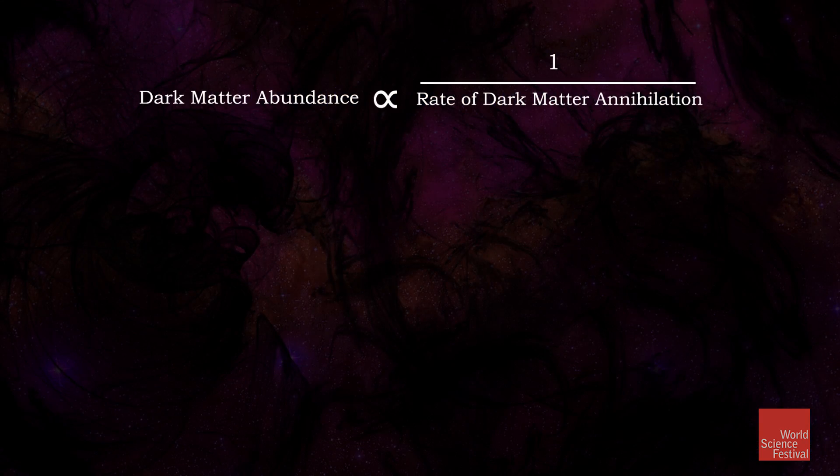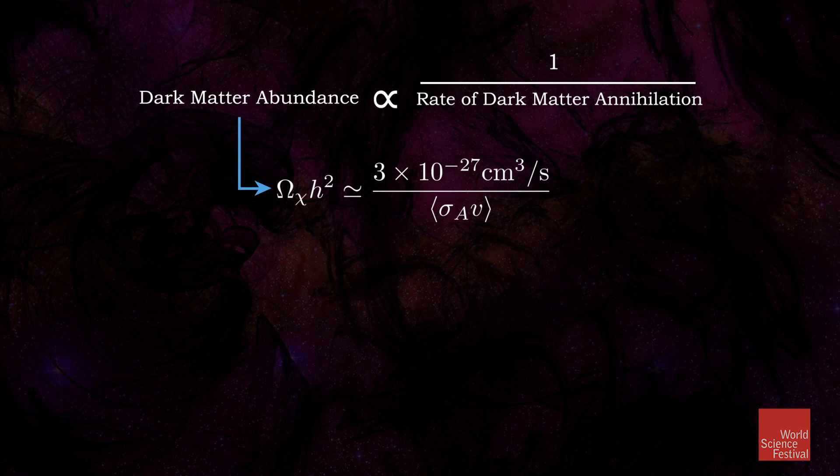However many dark matter particles are around at that point in time stays essentially constant until today, and that's the amount that we measure. You can actually calculate what this interaction rate is, accounting for the expansion of the universe, and get a specific prediction for the amount of dark matter present today. We have a rough version of that calculation right here. You don't have to understand the mathematics behind this, but the point is there is a well-defined, rigorous mathematical procedure that allows us to figure out how much of this dark stuff would be hanging around.